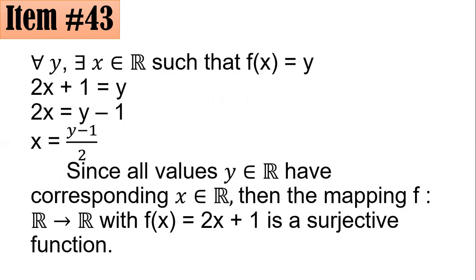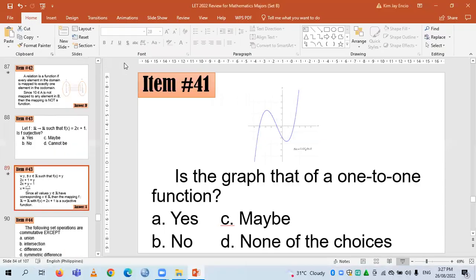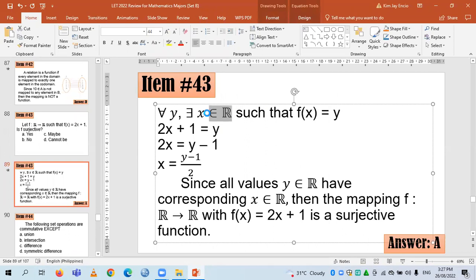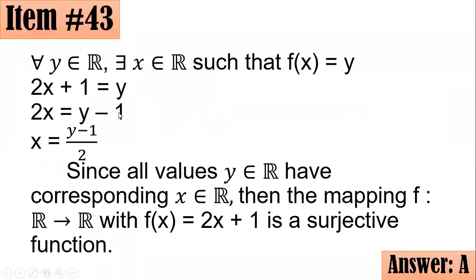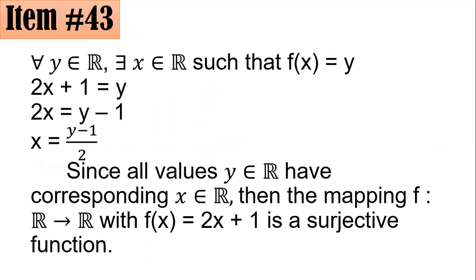To test if it is onto, for all y elements of ℝ in the codomain, there must exist an x element of the domain ℝ such that f(x) = y. Since f(x) = 2x + 1, I replace f(x) with y to get 2x + 1 = y. Solving for x: subtract 1 from both sides to get 2x = y − 1, then divide both sides by 2.